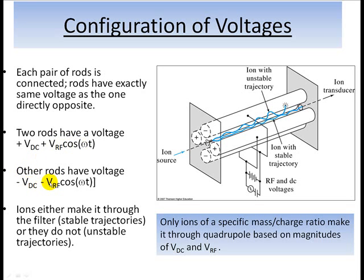Also, the alternating voltage is, of course, alternating, but because it's got this negative sign out here, it's like it's 180 degrees out of phase. So the alternating voltage on one pair of rods is 180 degrees out of phase with the alternating voltage on the other rods.